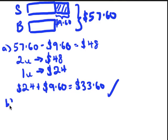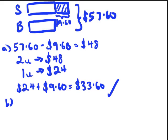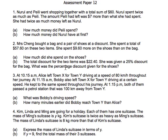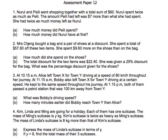So for part B, this is where I think it gets a little bit challenging. The total discount for the two items was $22.40. She was given a 25% discount for the bag. So how much was the bag? The bag was one unit which is $24. What was the percentage discount for the shoes? So they ask you to find out what is the percentage discount given for the shoes. But we don't know how much the discount for the shoes is. So we have to look for the discount. But how do we do that? We have to find out what is the discount for the bag first.